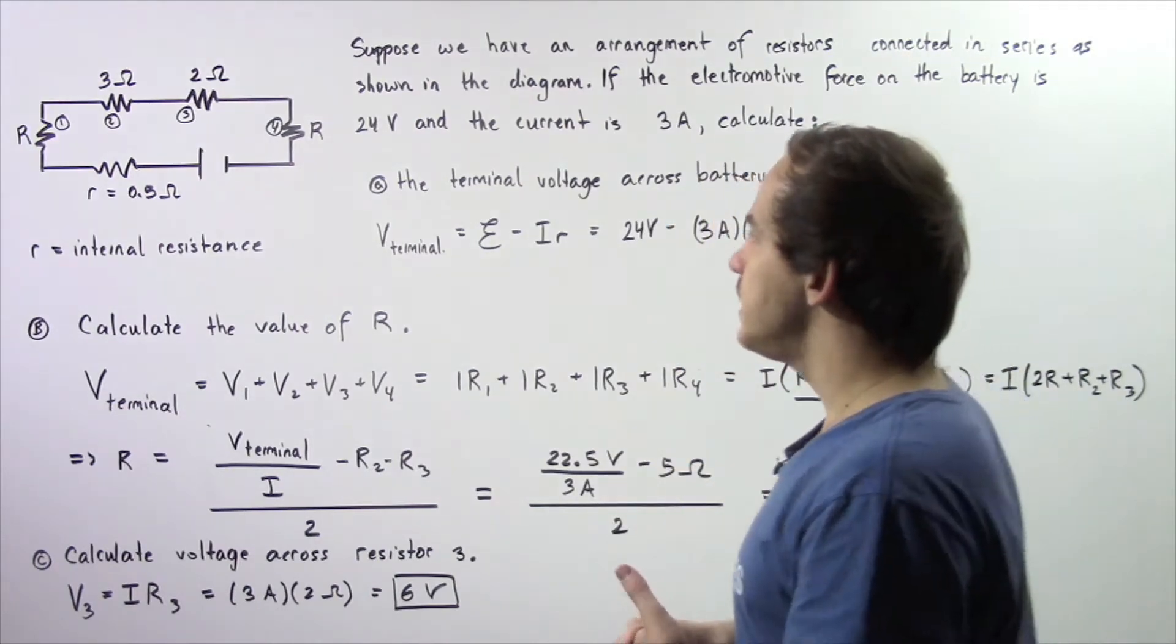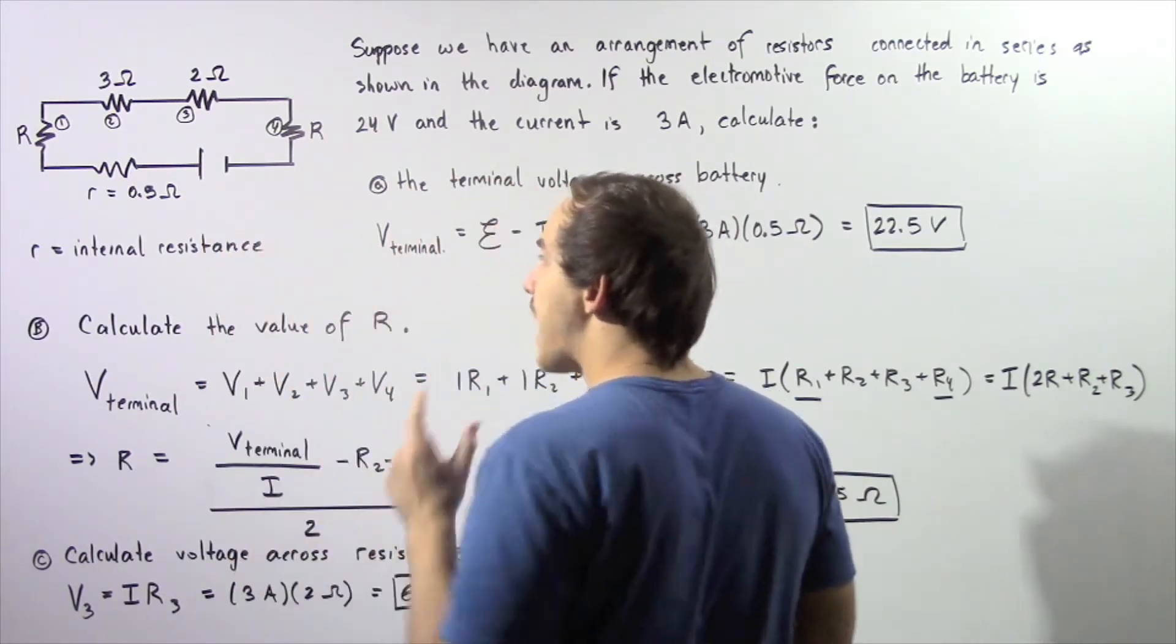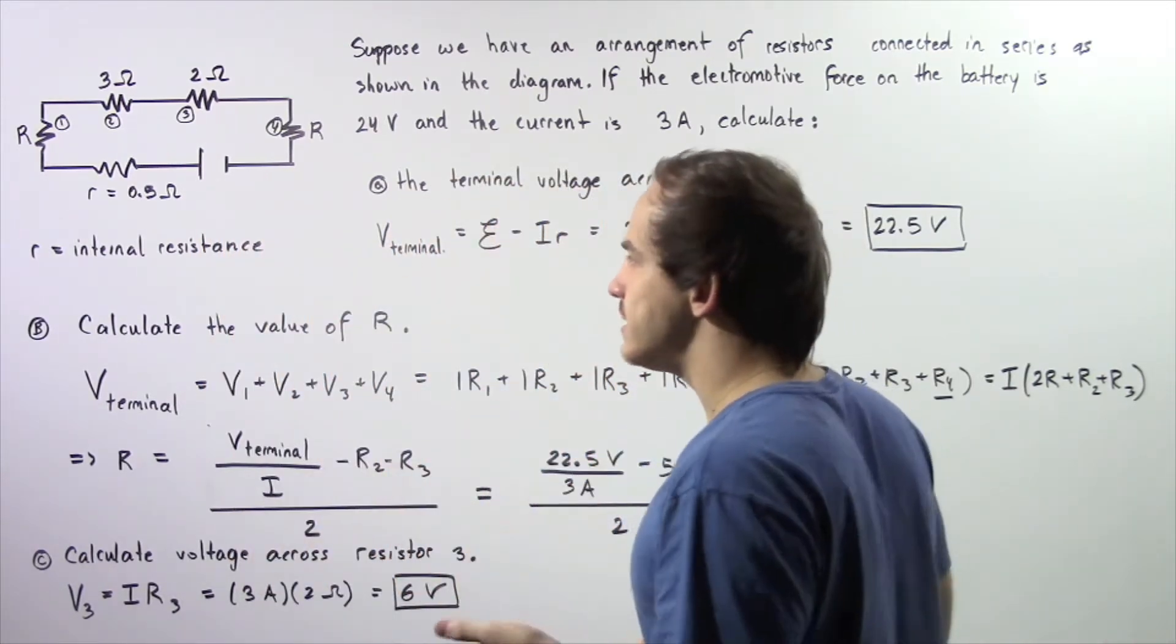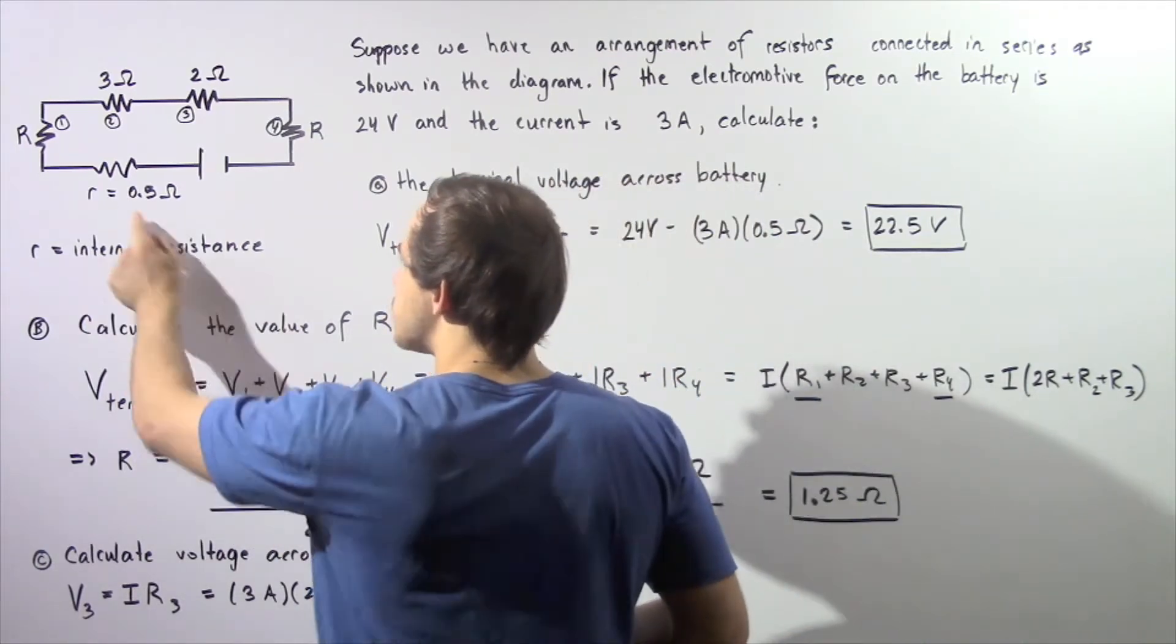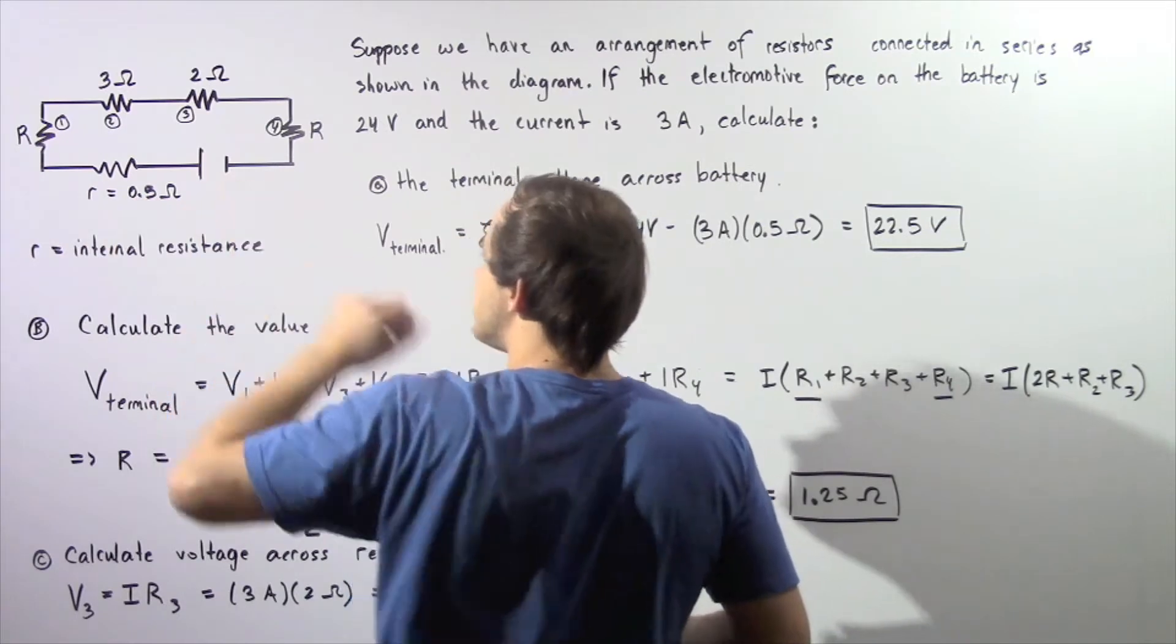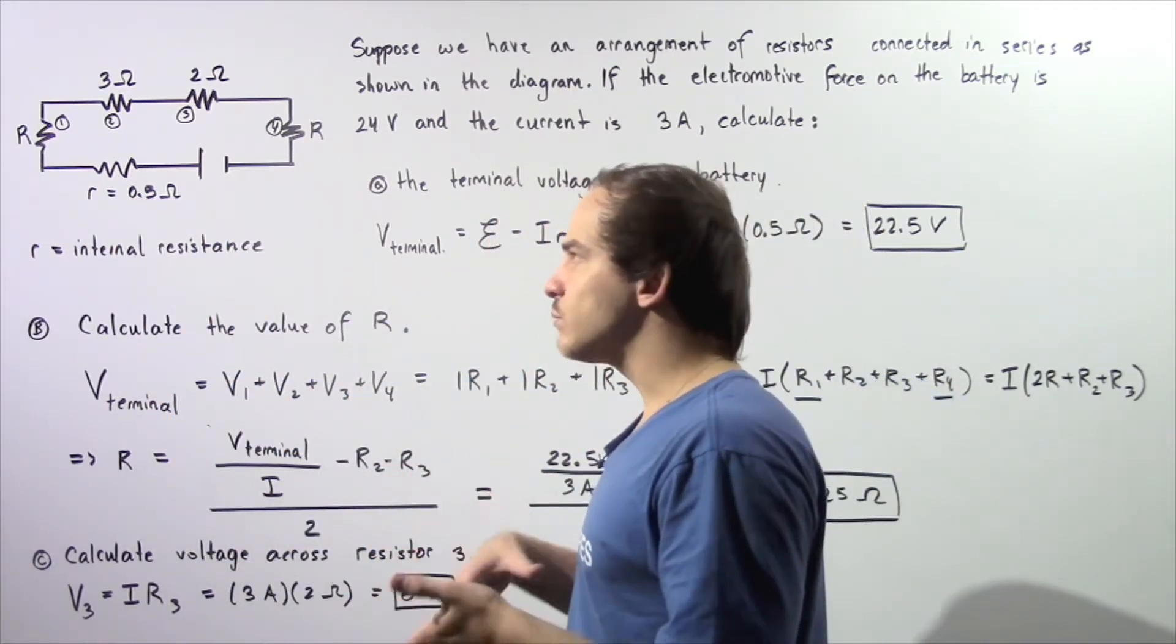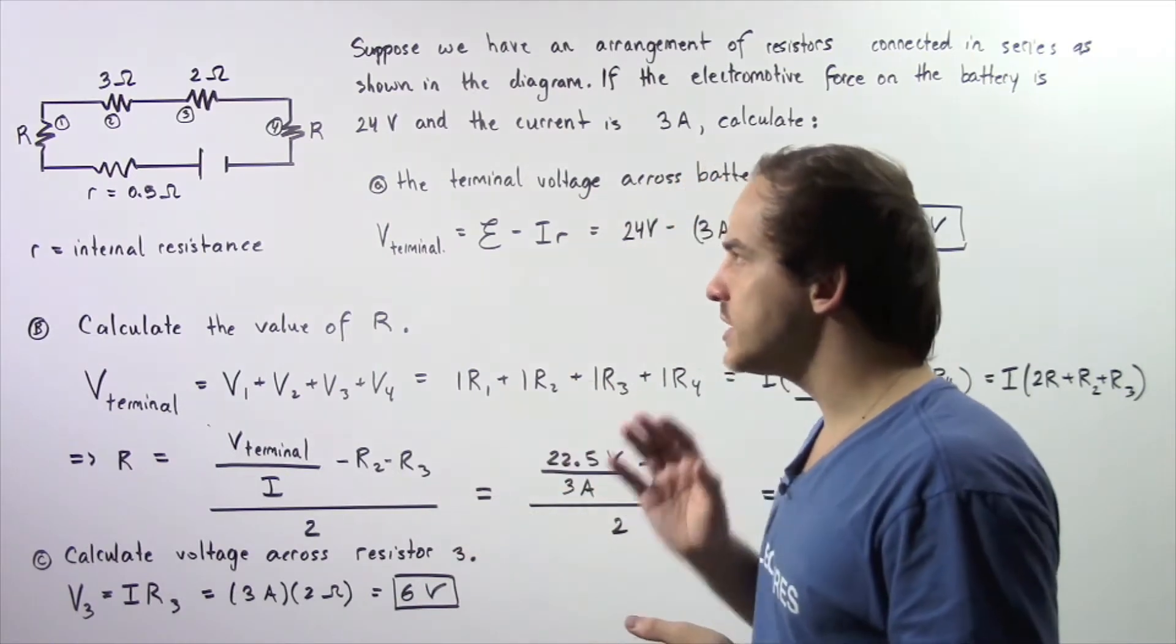So let's begin by examining our electric circuit. We have our battery and that battery has a certain quantity of internal resistance given by lowercase r. So this resistance is given by 0.5 ohms. Now on top of that we also have four different resistors.